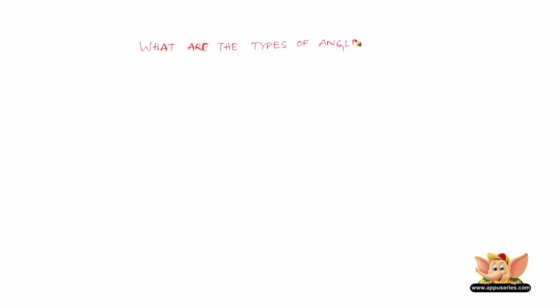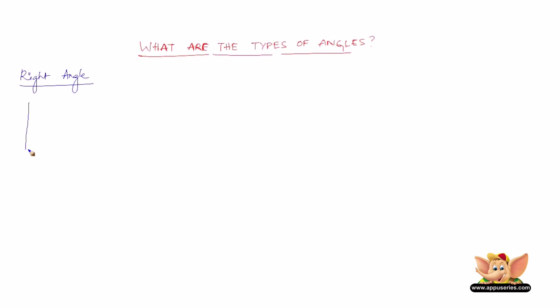Let us see what are the types of angles. The first type of angle is called the right angle. A right angle is an angle which measures exactly 90 degrees. This is called a right angle.